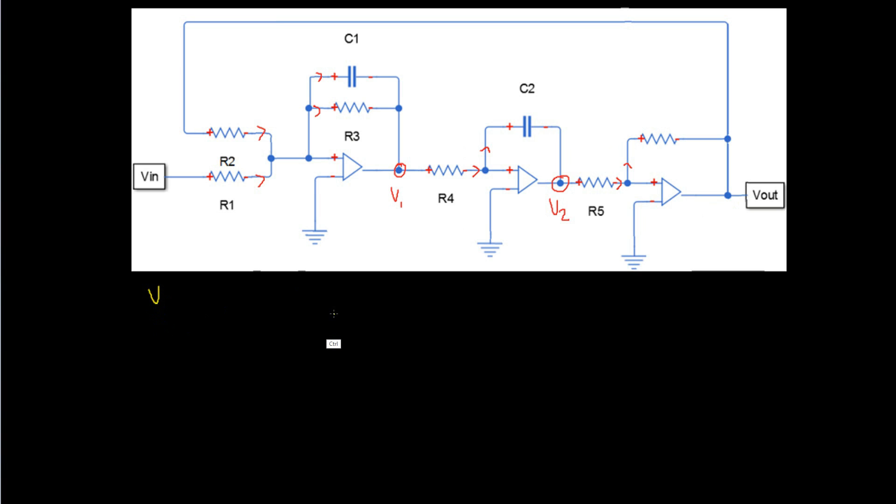So let's start with the analysis of our third op-amp first and work our way backwards. It's important to note that it doesn't matter the order that you do these in and we're going to end up with three equations which we can then use to relate to one another to find Vout divided by VIN. I find it easier just going from the right hand side and working my way to the left. So we have one current going through a resistor, R5.